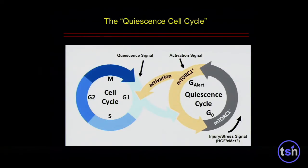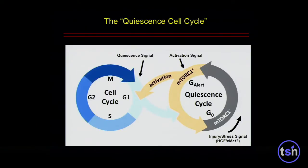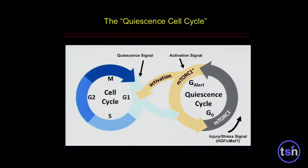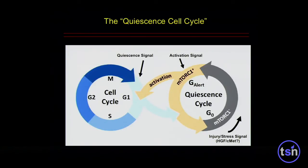We have this idea that there may be more stages to the quiescence cell cycle than just G0 and G-alert. Basically, in response to an injury — mediated by this signaling pathway in muscle — cells enter the alert state, still in quiescence. Some of them will spontaneously enter the cell cycle, but most will stay in this alert state and then return back to the quiescent state if not given another activation signal.